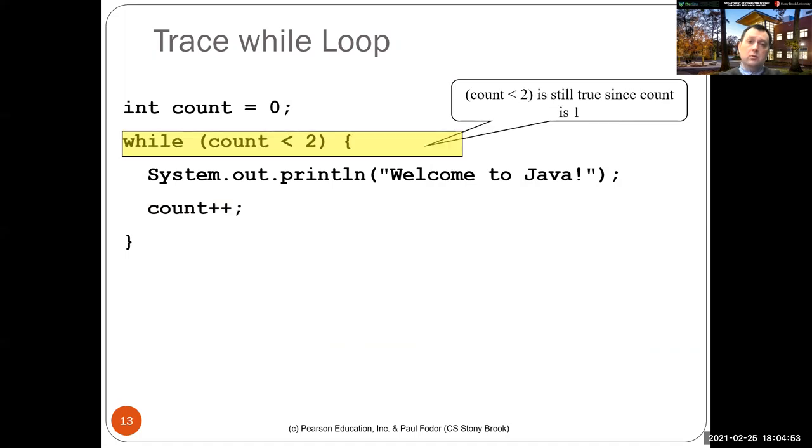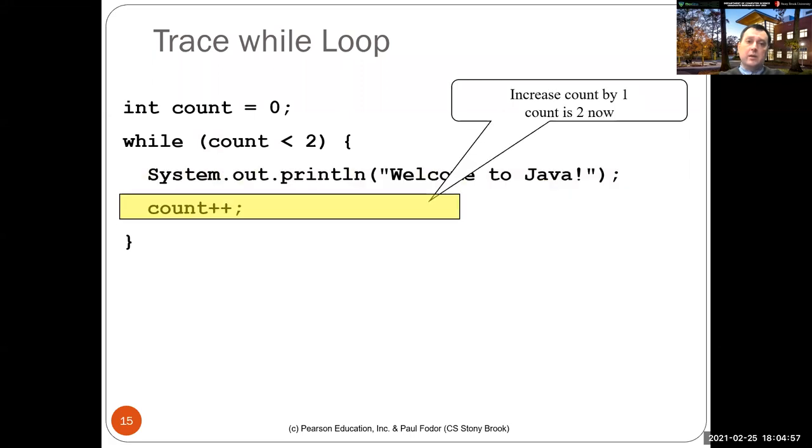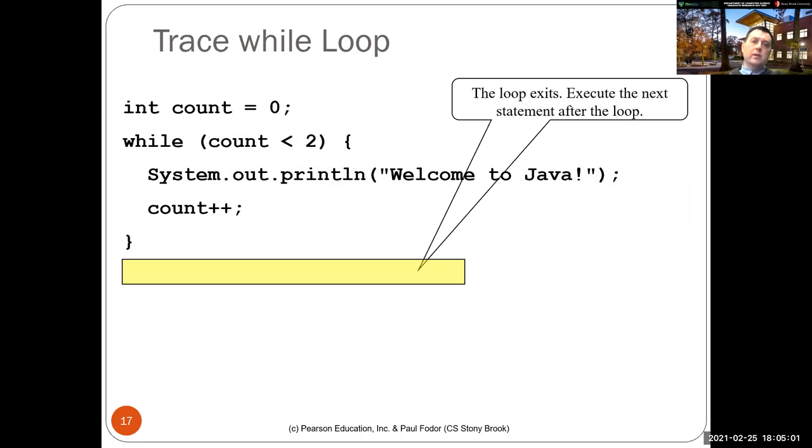One is less than two is also true. Print again the second time. Increment the count to two. Two less than two is false. Continue with the rest after the while statement. So that's how a while statement is executed.